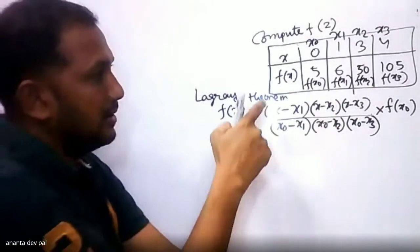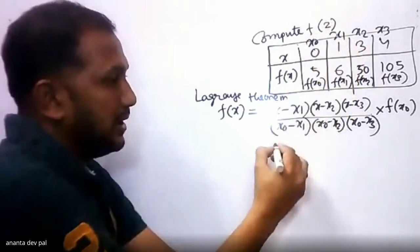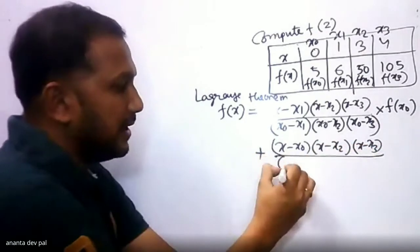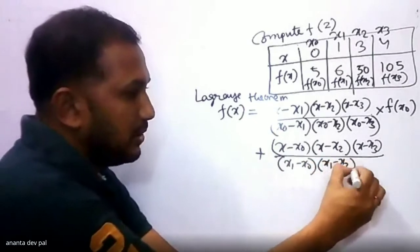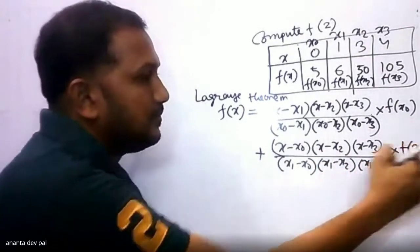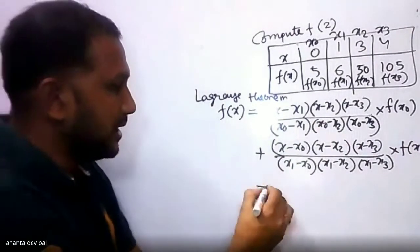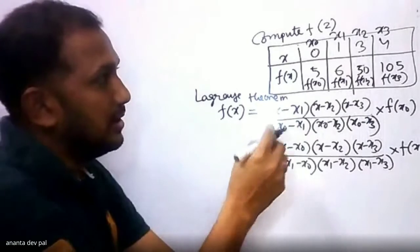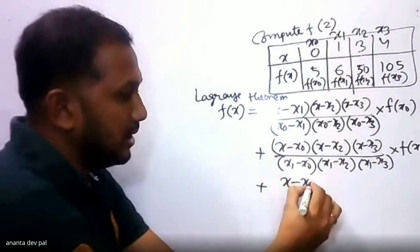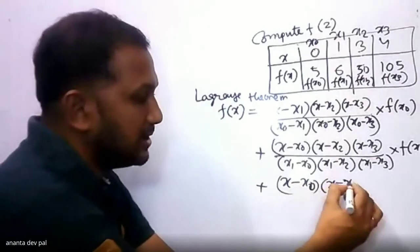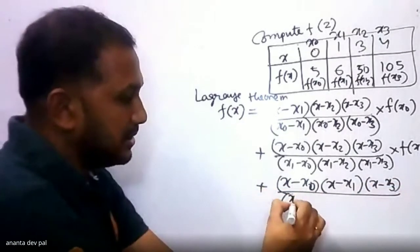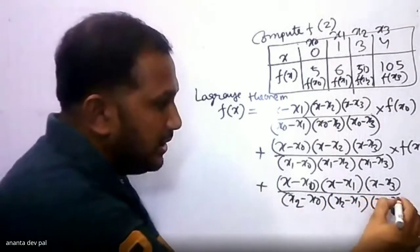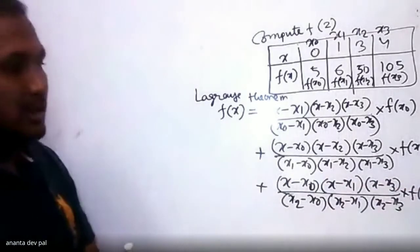Plus, now consider x1. Delete x1 from your mind. The second term is: (x minus x0)(x minus x2)(x minus x3) divided by (x1 minus x0)(x1 minus x2)(x1 minus x3), multiplied by f(x1). Then, delete x2 from the table. The third term is: (x minus x0)(x minus x1)(x minus x3) divided by (x2 minus x0)(x2 minus x1)(x2 minus x3), multiplied by f(x2).